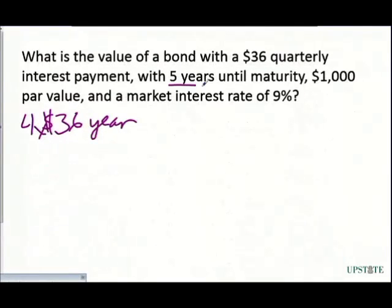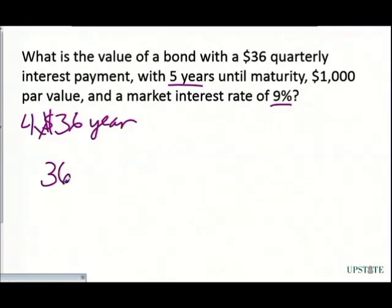We have five years, which is a yearly rate, a face value that doesn't get changed, and a market interest rate that's also a yearly rate. So we have to convert those five years into the number of quarterly payments, and convert that nine percent into a quarterly interest rate. When we set it up, we have a $36 payment — that's the amount we actually receive.